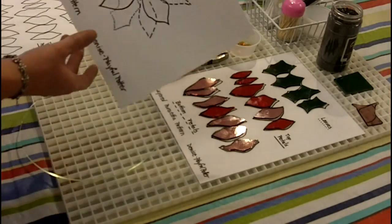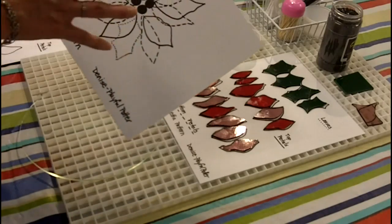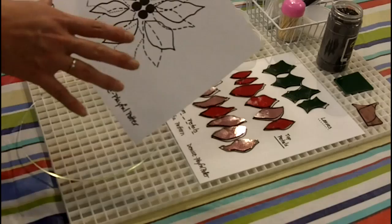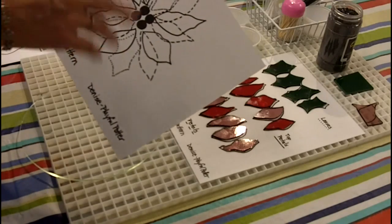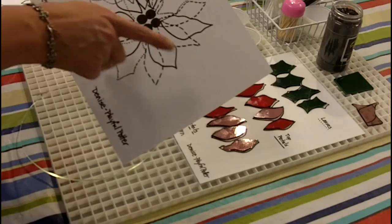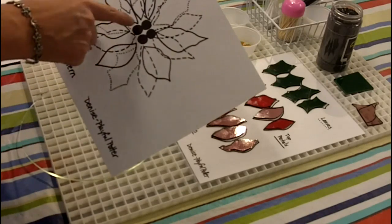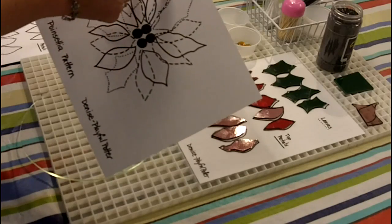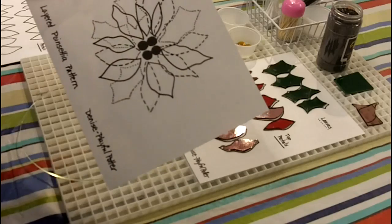So you start off with a pattern. This is the pattern for the poinsettia. It looks really complicated, but once we start laying it out, it makes a lot of sense. There will be copies of this made available. We've made different outlines of the shapes depending on where they're located. The dots are for the leaves, the dashed lines are for our bottom layer of petals, and the solid lines are for the top layer of petals.